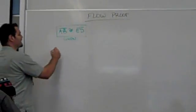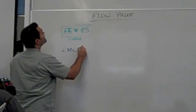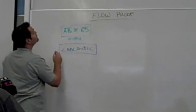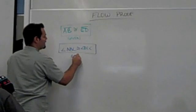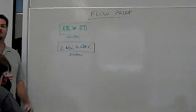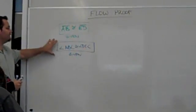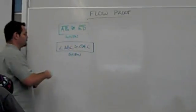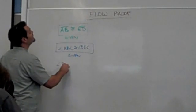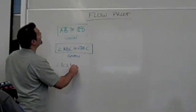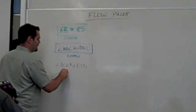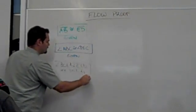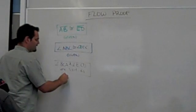My second piece of the puzzle is angle ABC is congruent to angle DEC. That's also given, and it's a separate box. I've chosen to make them separate colors to help you delineate them. And my third fact: angle BCA and angle ECD are vertical angles. Statements go in a box, and underneath it you write your reason.